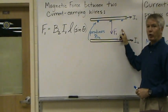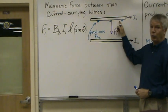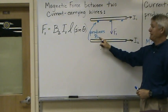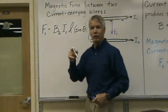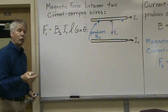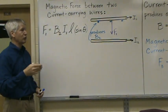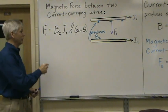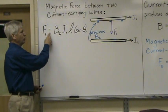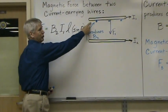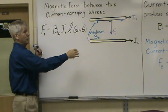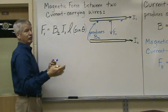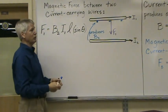This is force 1 being applied on wire 1 by the magnetic field B2 produced by this wire. So the equation for that force applied to this current carrying wire in a magnetic field is F1 equals the magnetic field strength times the current going through the wire times the length of the wire times sine of theta. And as I said before we're using 90 degrees.